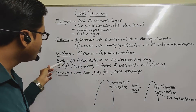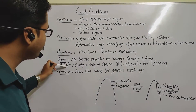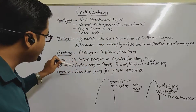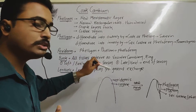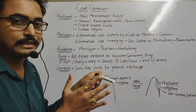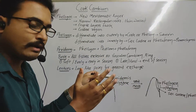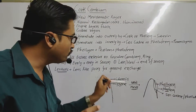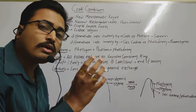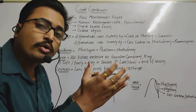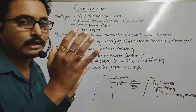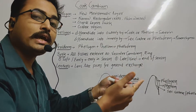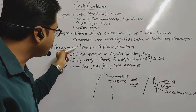Bark can be hard or soft. Bark has two types: the first is soft bark or early bark, and the second is late bark or hard bark. The bark which is formed in the early part of the season is known as early bark, which is soft. The bark formed at the end of the season is called late bark, which is hard.